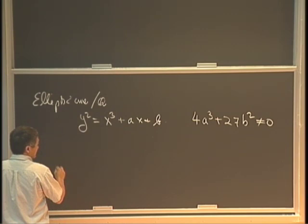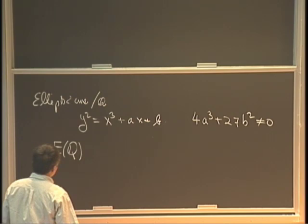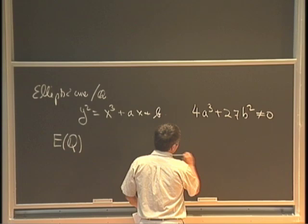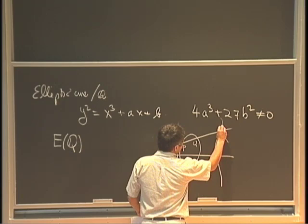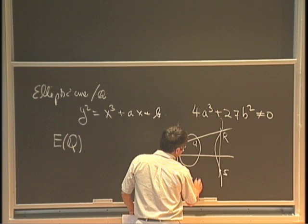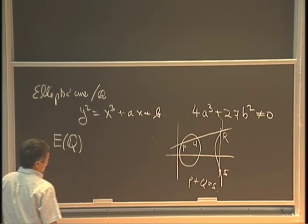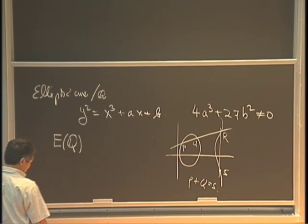We care about the group of rational points, which is a group. As usual, probably in any first book on elliptic curves, you will have the group law defined by lines. You have P, Q, R, so you get S here, and P plus Q equals S. It was noticed by Poincaré that if P and Q are both rational, the sum will be rational, so this becomes a group.